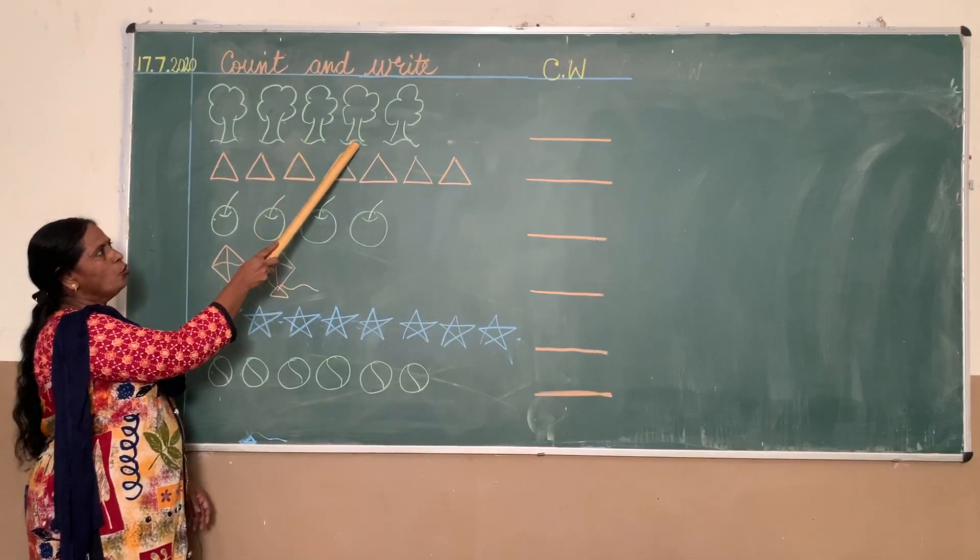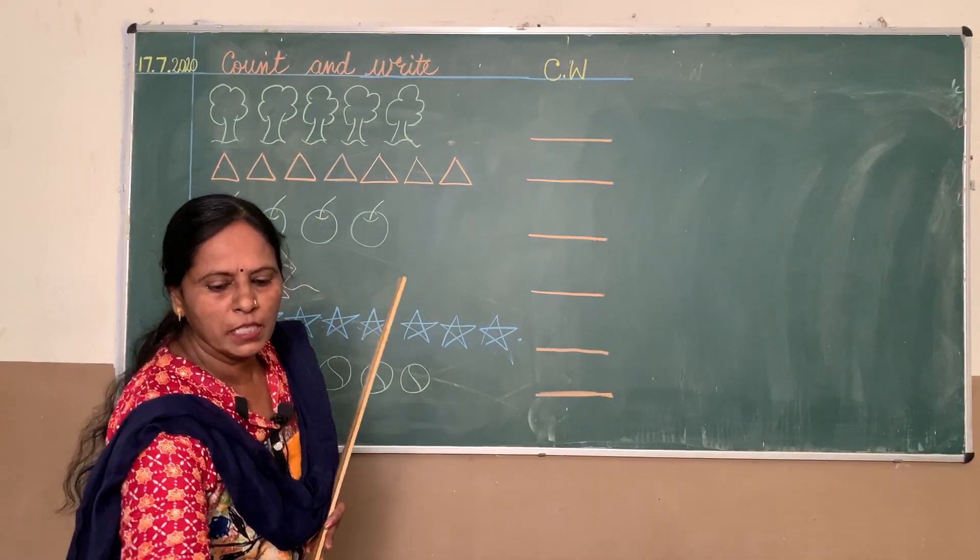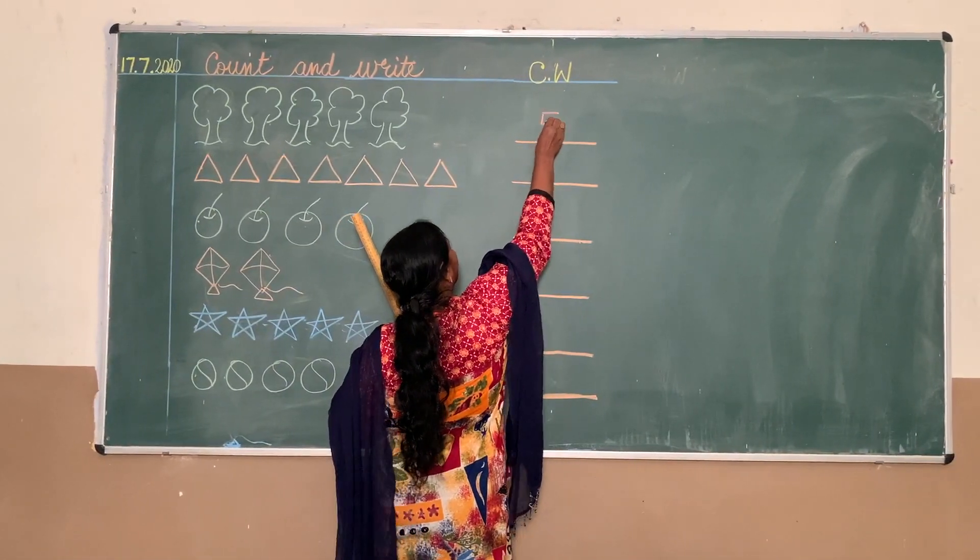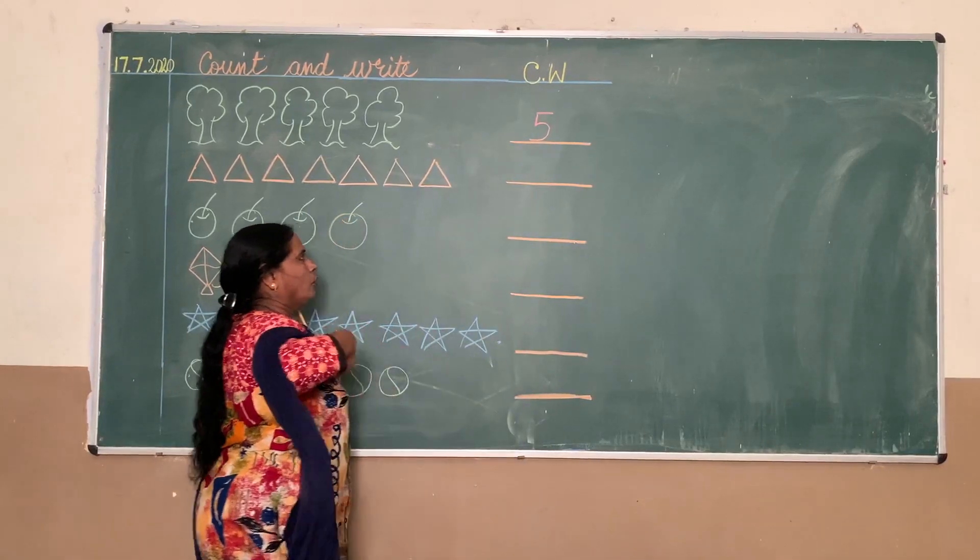How many trees did you count? You all counted five trees, so we will write five here. Is it clear, children? You will write five here because you counted five trees.